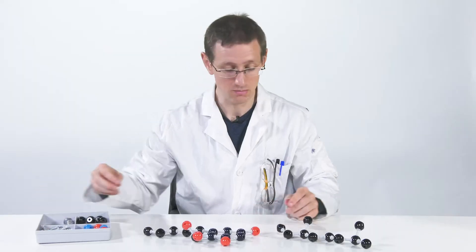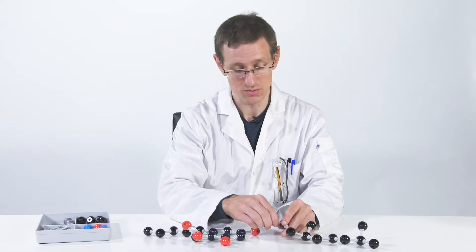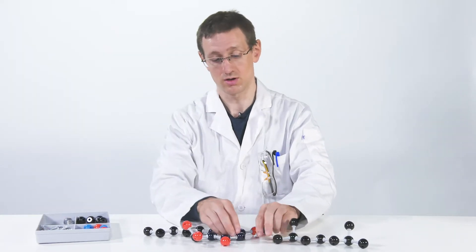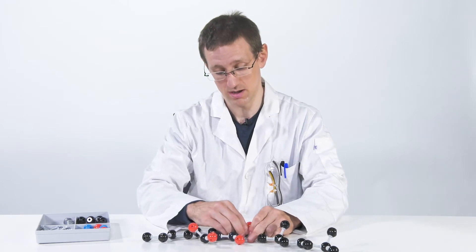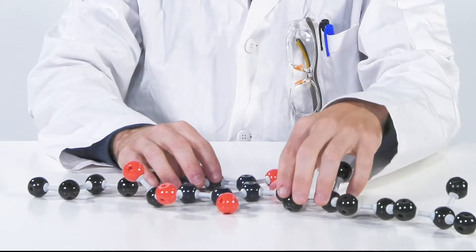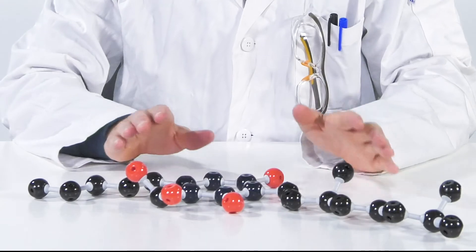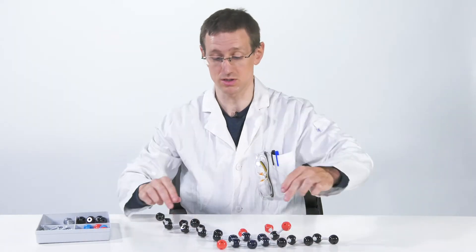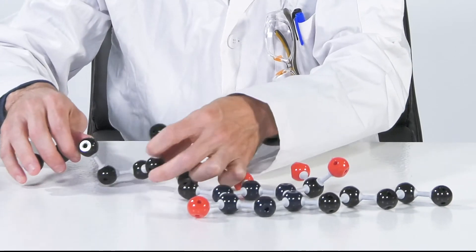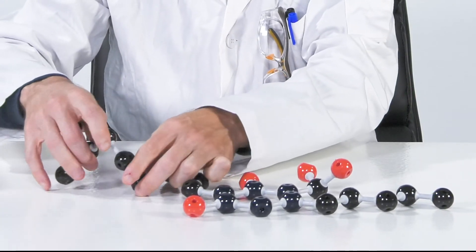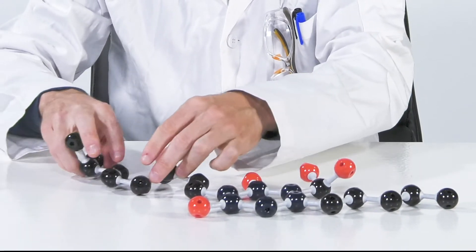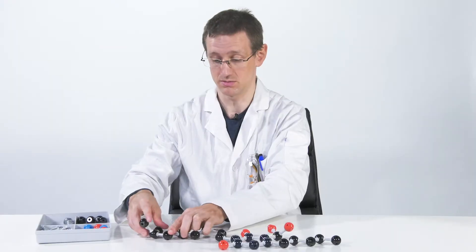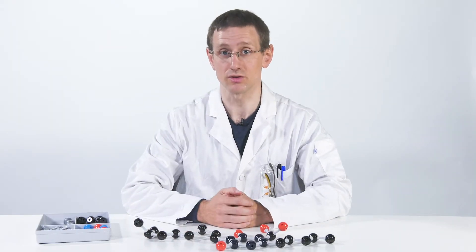Now we can marry our terpene unit, the myrcene, and our benzene ring, which was the olivetolic acid, which gets us now to CBG. Let me just turn this around, because mostly you see it this way, presented. Here we can just turn around these bonds to give it a bit better representation. So, this is CBG acid.